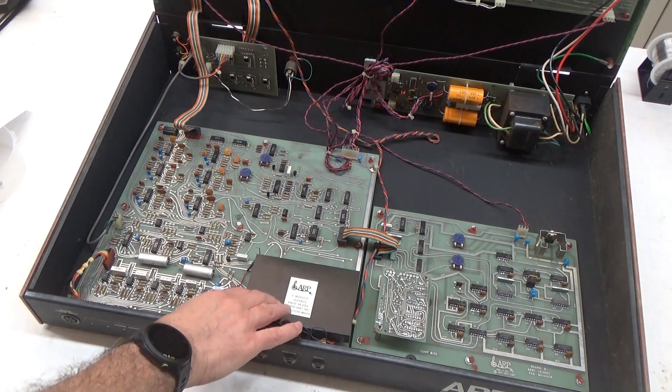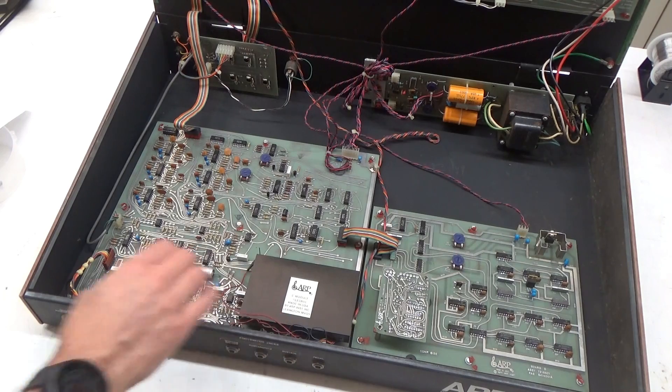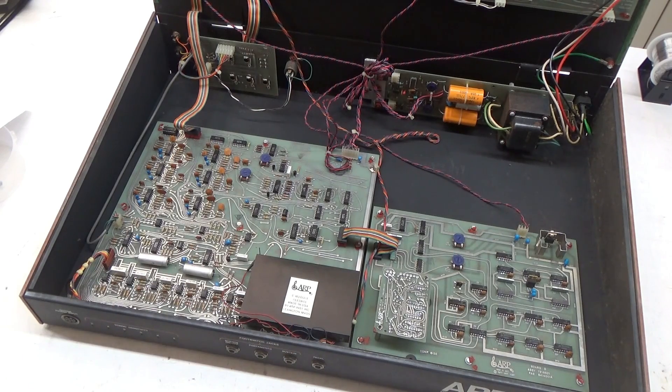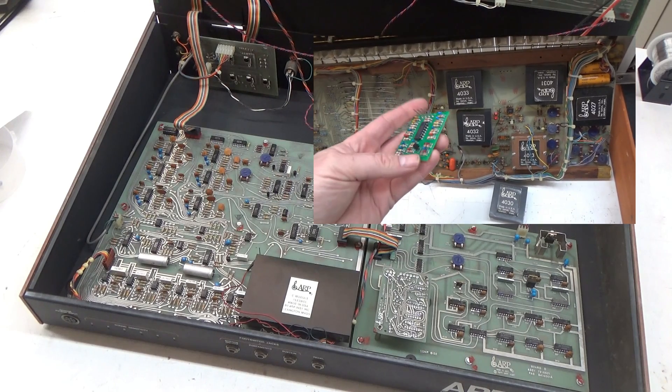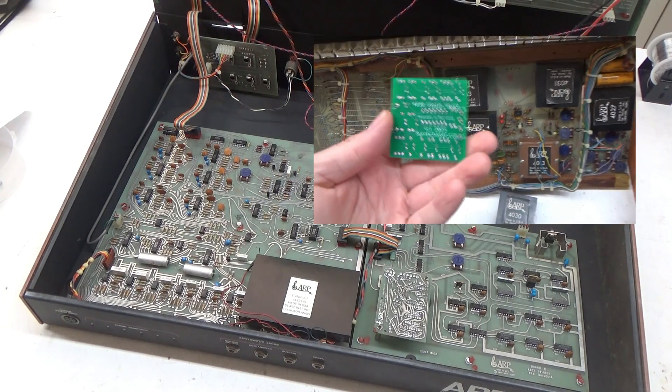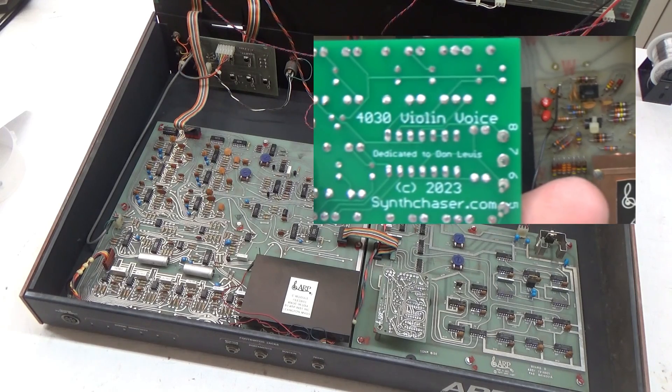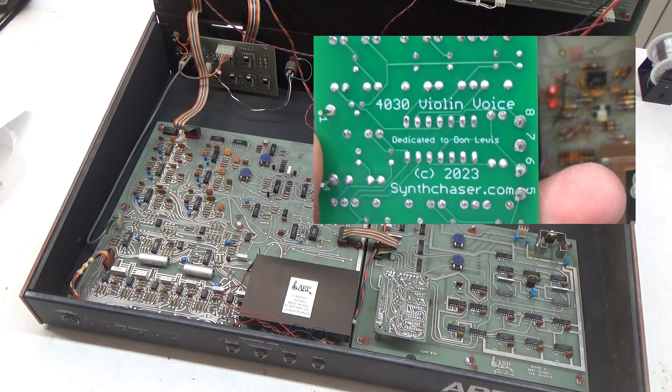You'll notice that this board has an encapsulated submodule. In the early days, ARP used encapsulated submodules to try to protect their designs, which just happened to conceal that they had infringed on Moog's patented ladder filter design. They started by potting them in epoxy, which makes the modules not feasible to repair. We ran into this challenge on the Don Lewis ARP soloist that had a bad 40-30 violin voice module in a previous video.